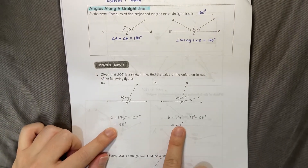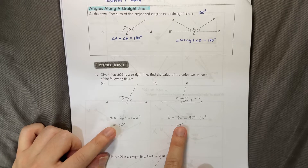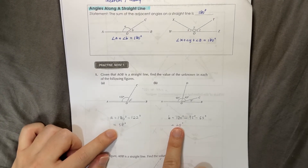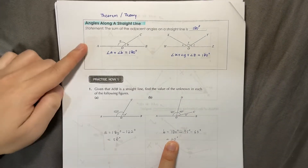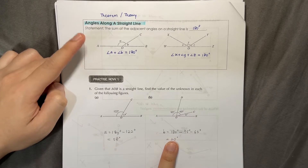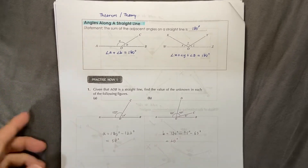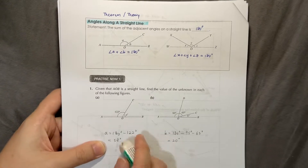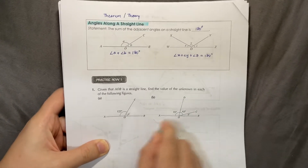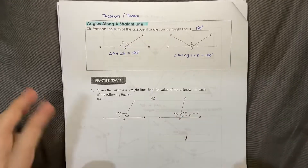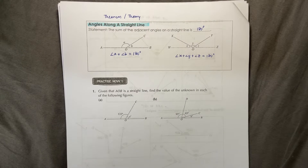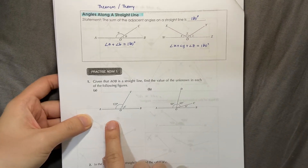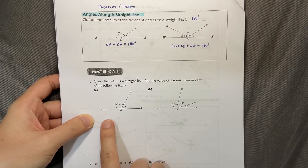However, in secondary school, because we want to encourage communication, we need to write down the angle property that we use - the reason why we use it. We want a clear explanation. Otherwise, with more complicated problems, we won't know what property people used. So we need to write down the property so that people know what we use.